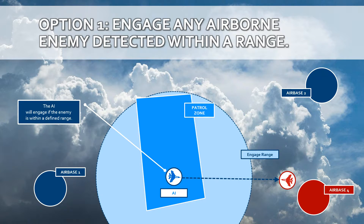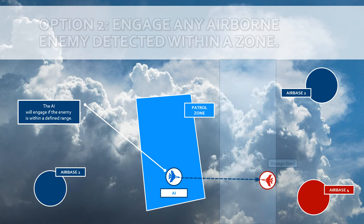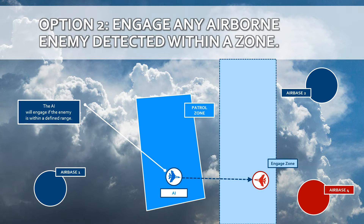This kind of scenario is sometimes not so practical, and therefore there are two options created within the CAP process. The first is you can let the AI only engage if the bogeys are within a certain engage range, expressed in meters — for example, only engaging when the enemy is flying within 20 or 30 kilometers. The second option is that you only want to engage the enemy when it is flying within a defined engage zone. Both options provide a lot of flexibility to control the behavior of the AI while patrolling.